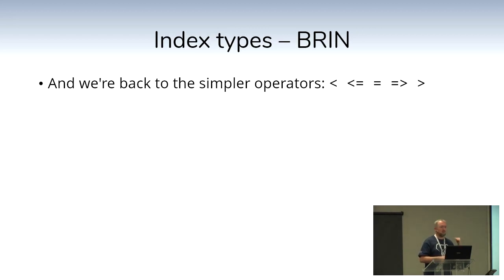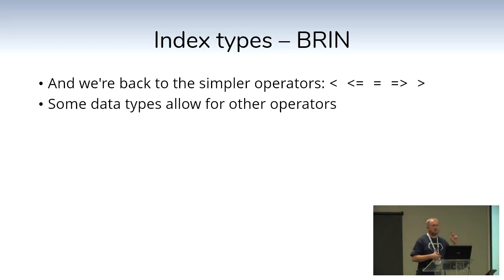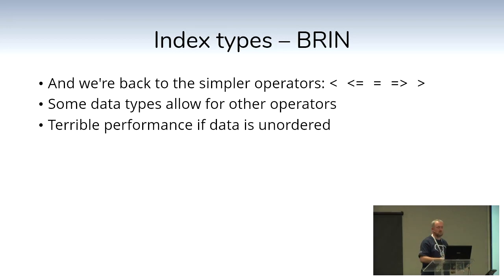BRIN supports simple range operators — less than, greater than, equal to, and so on — because the database is storing a range for the index. A couple of extra operators are added by data types like inet for IP addresses. To reiterate: absolutely terrible performance if the data is not ordered. The query optimizer will likely just ignore the index if it thinks it's indexing across too broad a range.